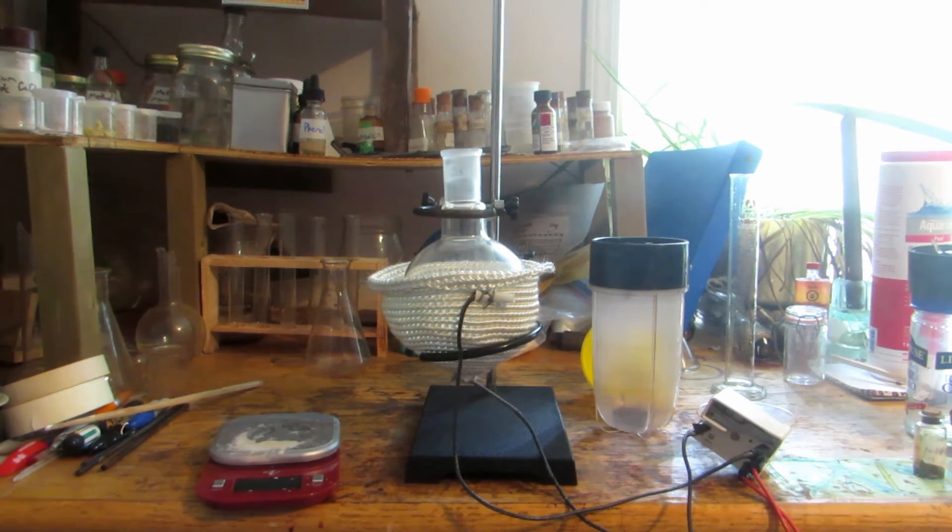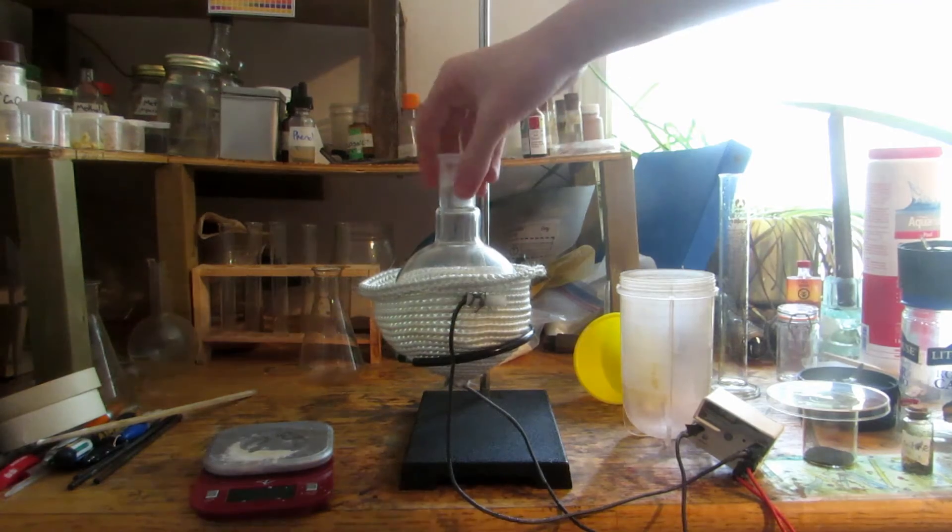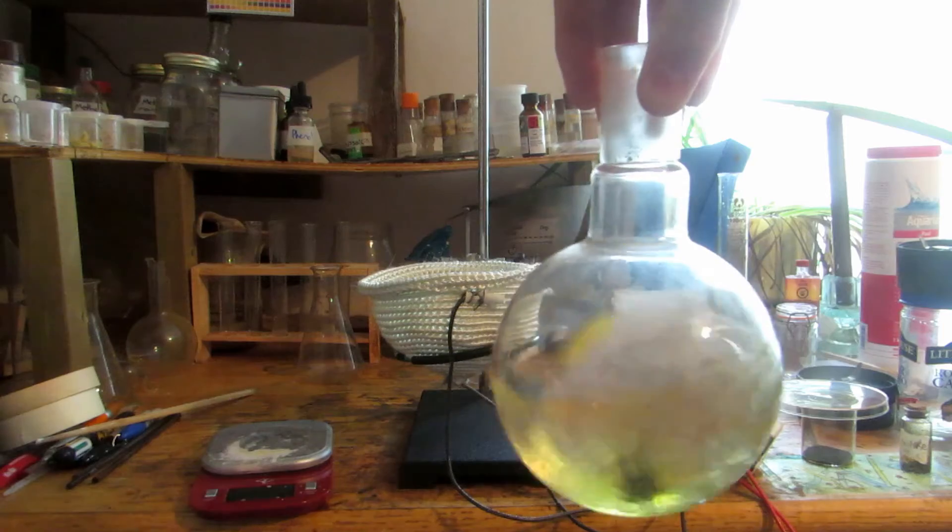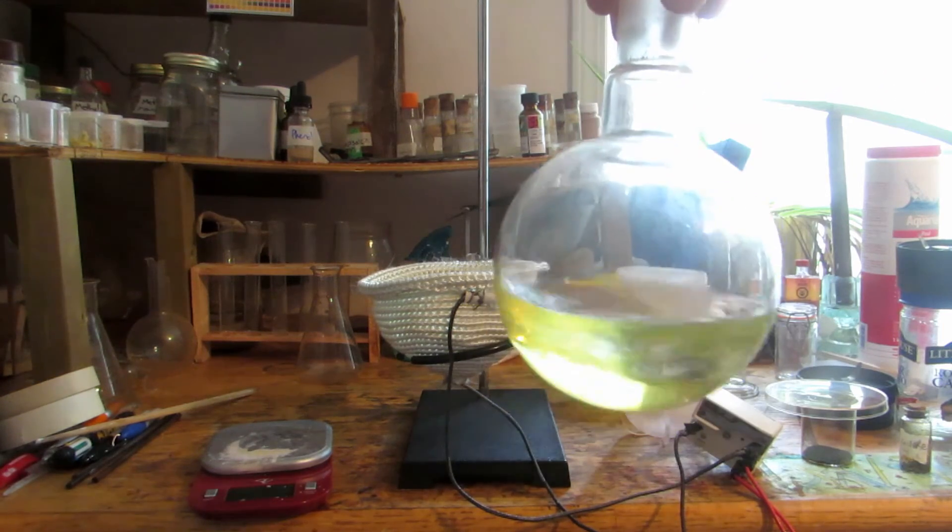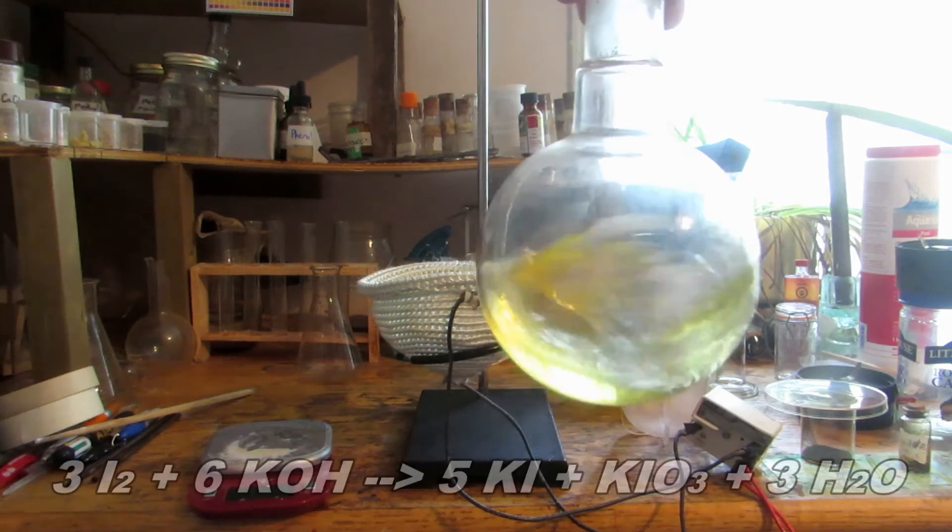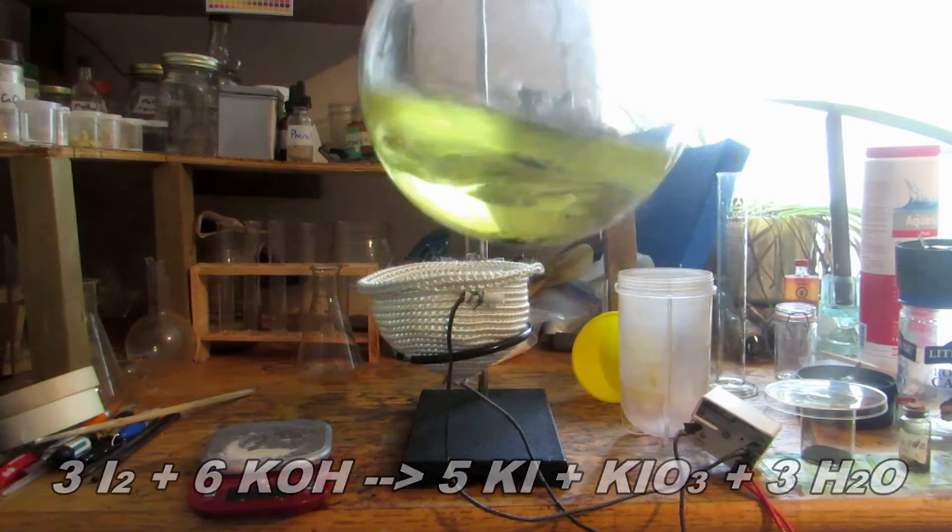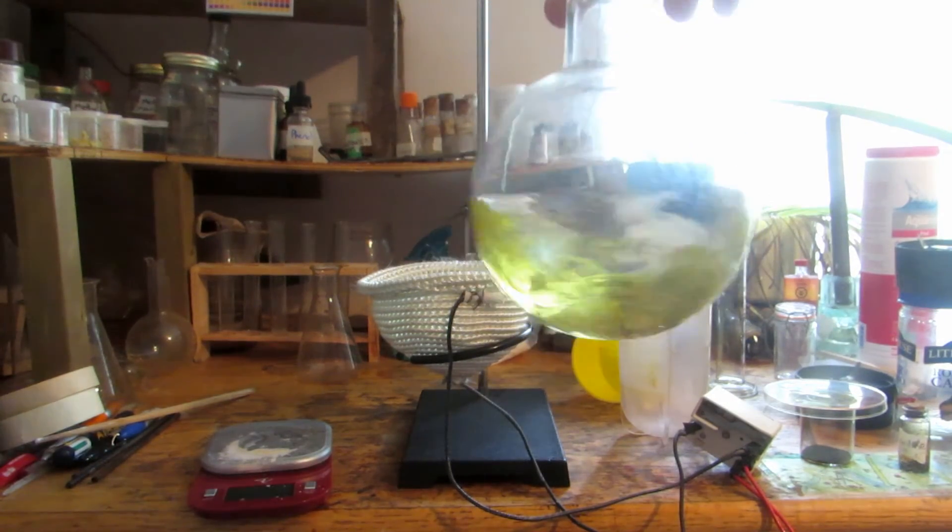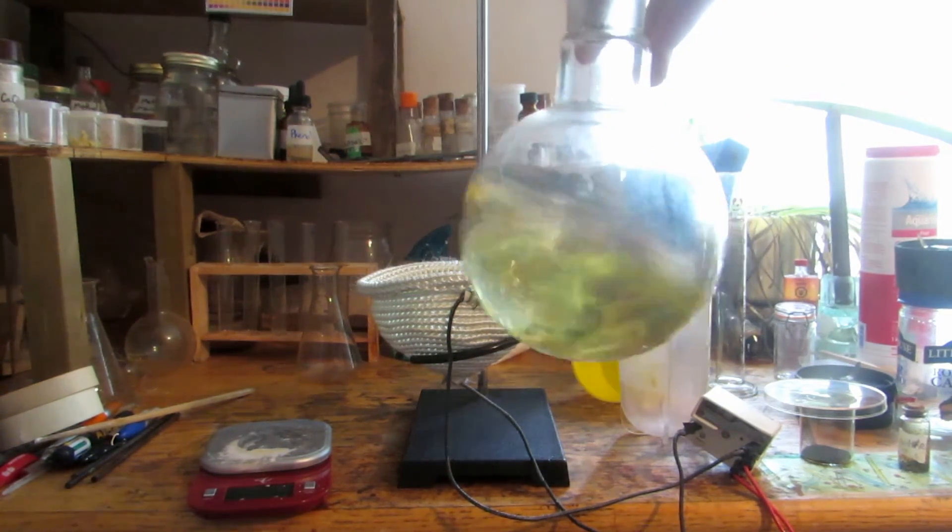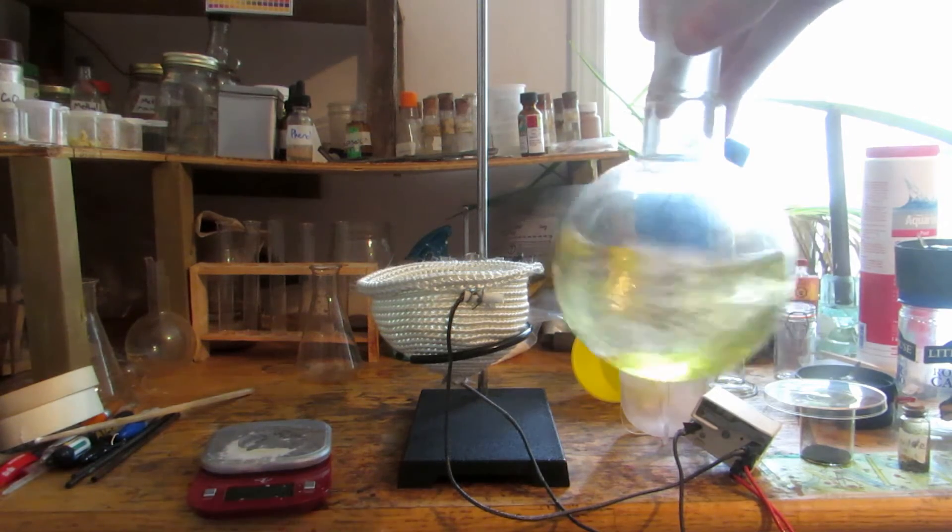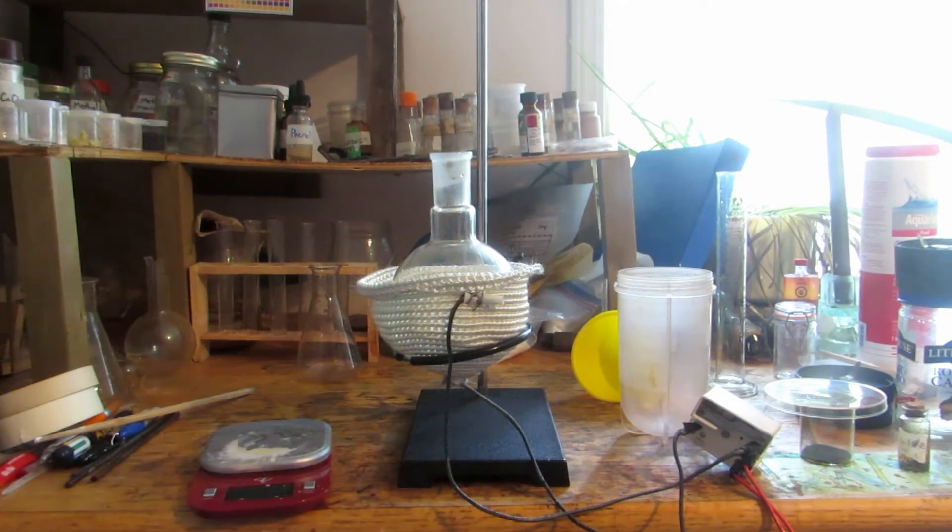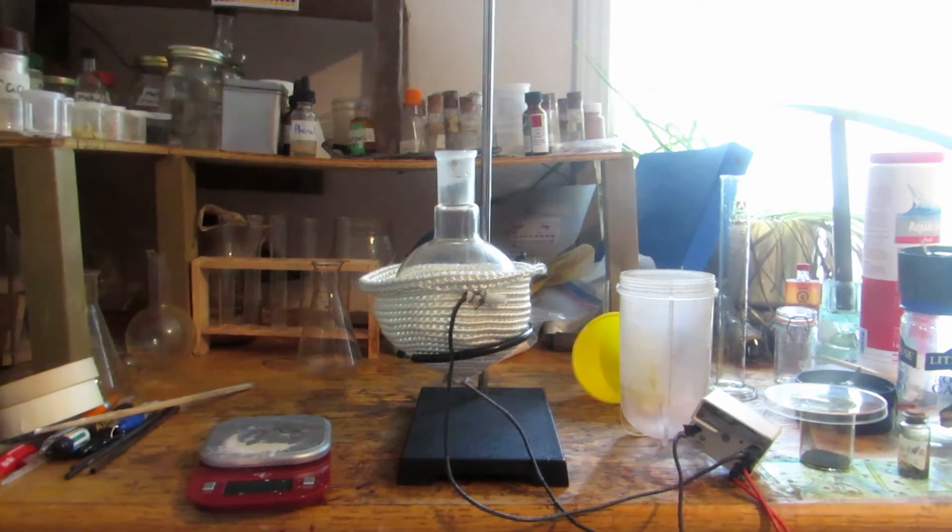I added a bit of iodine, and you can see in the bottom it's slightly colored yellow. If we swirl it around, it's starting to dissolve and react with the potassium hydroxide, forming a nice yellowish color. I believe this is because of the iodate. We'll continue to heat this and slowly add more iodine until we've reacted all of it.